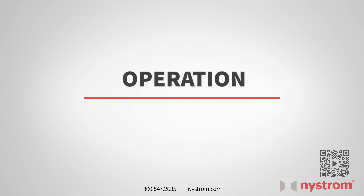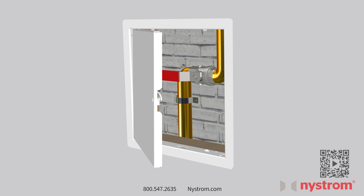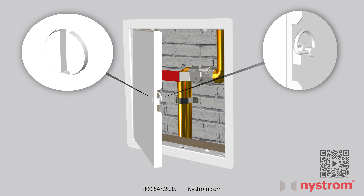Operation. Access doors are designed and built for years of dependable wall and ceiling access. The basic components for door operation include latching and locking mechanism and hinges. A screwdriver-operated cam latch is our standard. Other latch options include key-operated cam lock and mortise lock prep. To lock or unlock the latch, use a flathead screwdriver.